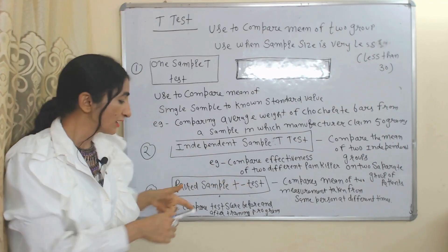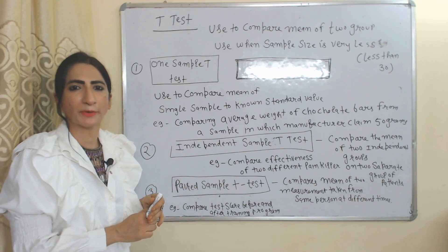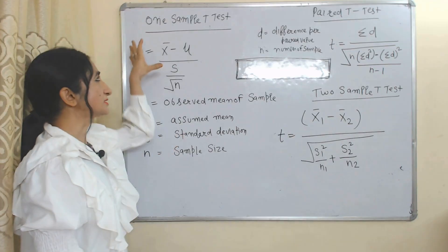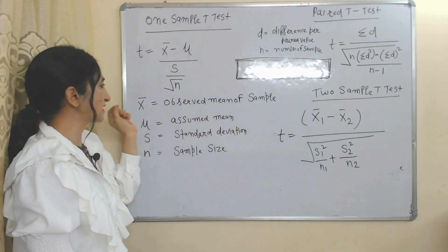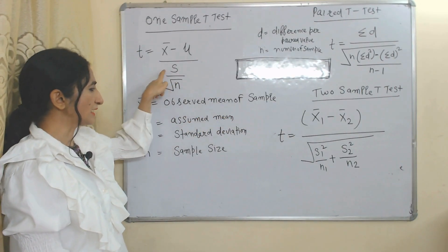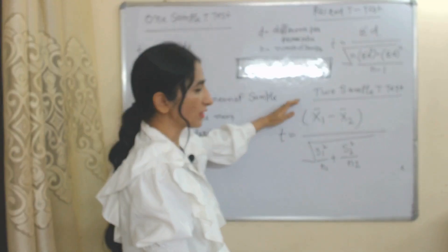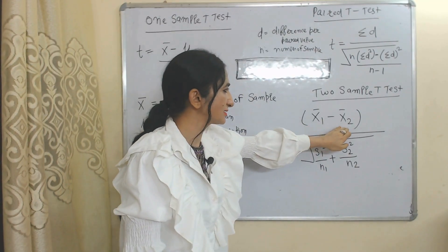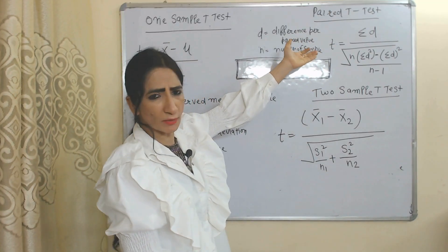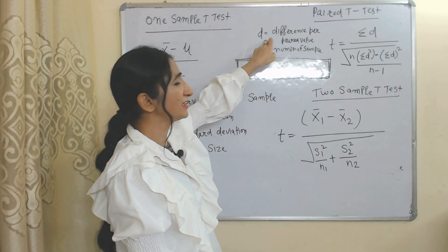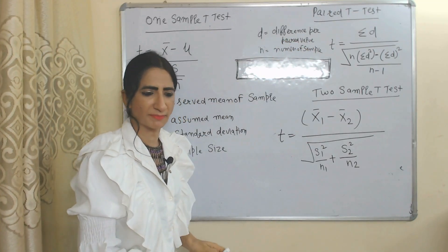Paired sample T test: we use it to compare the mean of two measurements taken from the same individual but at different times — for example, compare test scores before and after a training program. The one-sample T test formula uses x̄ (observed mean), μ (assumed mean), s (standard deviation), and n (sample size). The paired T test formula uses d (difference per paired value) and n (number of samples).